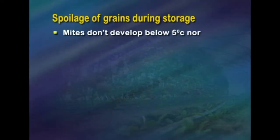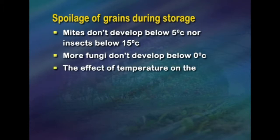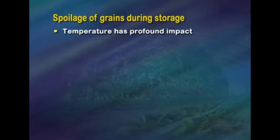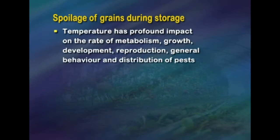Some important points during grain storage: mites don't develop below 5°C, nor insects below 15°C. Most storage fungi don't develop below 0°C. The effect of temperature on the organism is correlated with the amount of moisture present, as a rise in temperature corresponds to a decrease in moisture content. Temperature has a profound impact on the rate of metabolism, growth, development, reproduction, and general behavior.